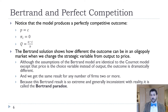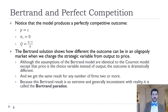This is called the Bertrand paradox. It's a paradox in some ways because firms do often compete on price, but the empirical evidence shows that the fewer firms in a market, the higher the price and profits are. That looks a lot more like Cournot than Bertrand.